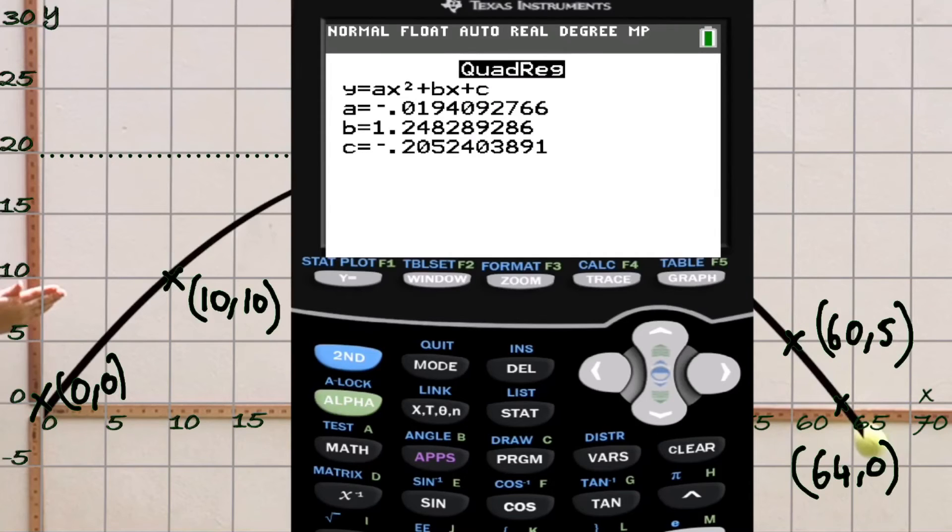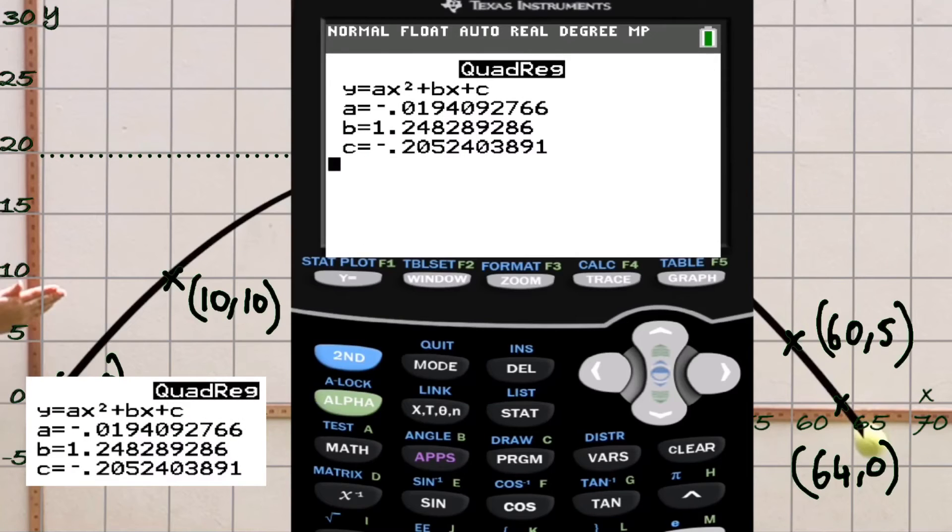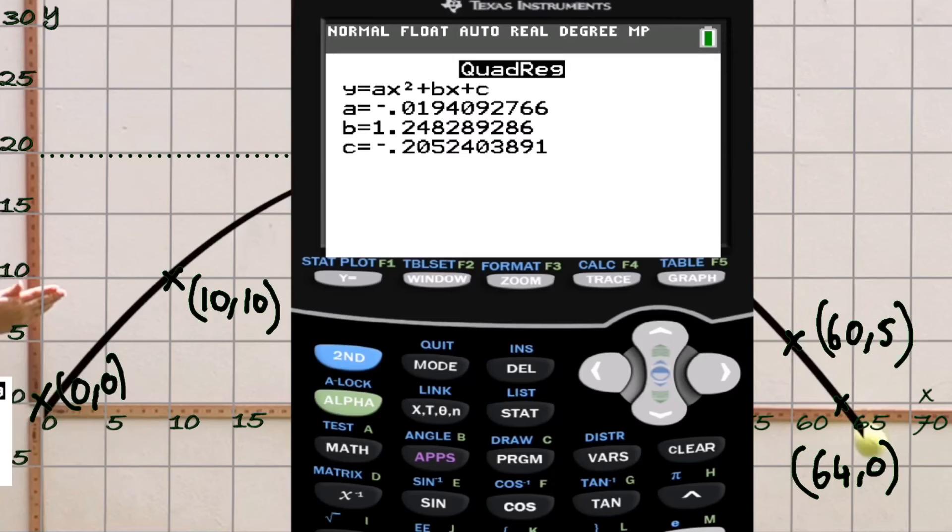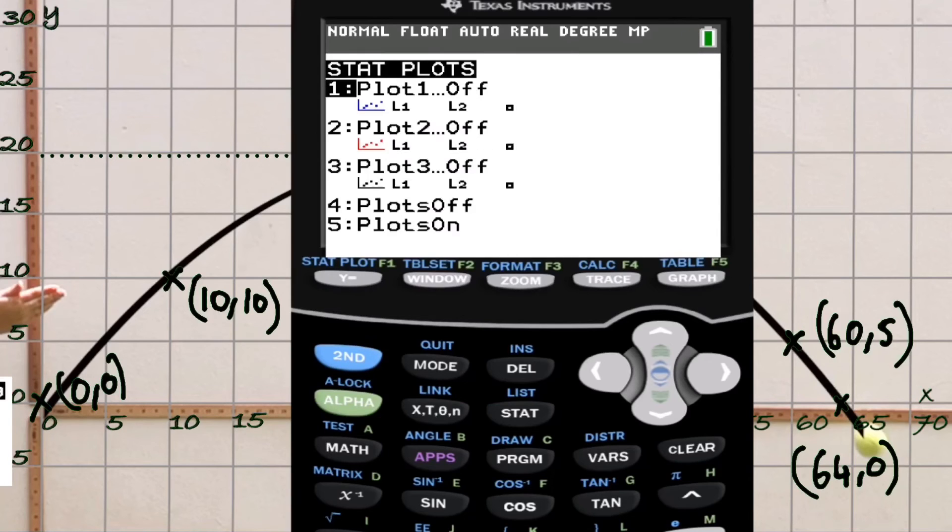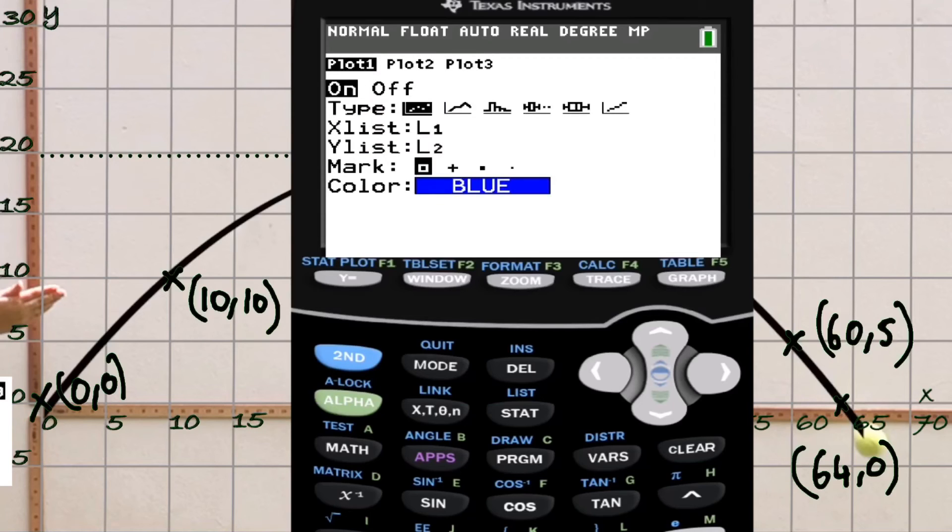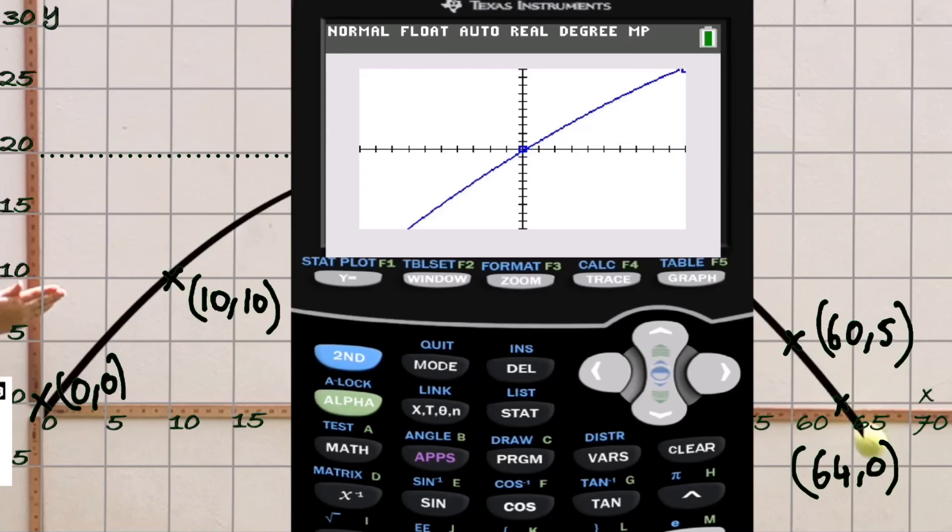Here we go, we have our a, b, and c in the standard quadratic notation, which is y equals ax squared plus bx plus c. Those are the points there. We can make a note of that. We're going to go to GRAPH. Before I do that, I'm going to go to second, then STAT PLOT, and I want to make sure that this is on.